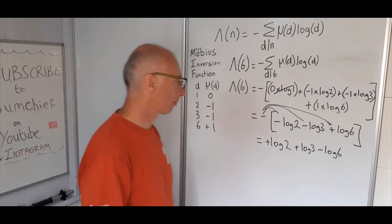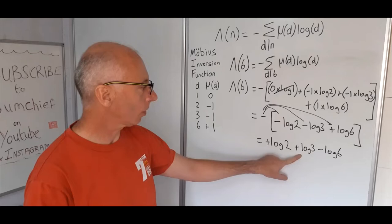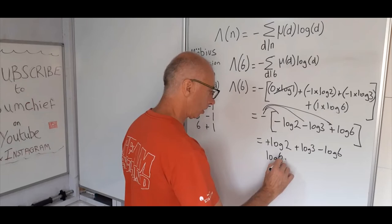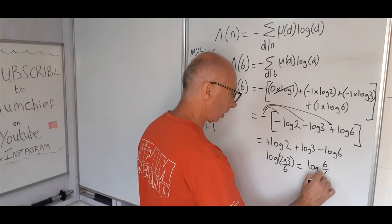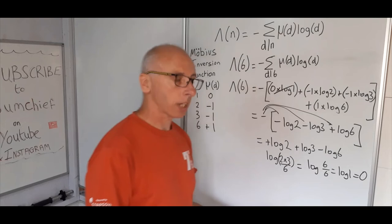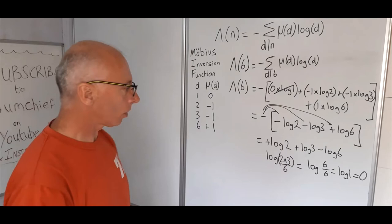Using log properties, log 2 plus log 3 gives us log 6. So we have log 6 minus log 6, which equals log of 6 over 6, which equals log of 1, which gives us 0. That's one side of the equation sorted out.